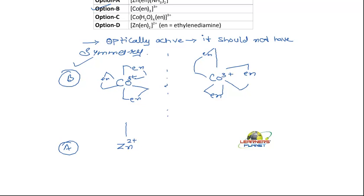This is zinc 2⁺, and there are EN, I have got one NH₃, and here again NH₃. Now this is tetrahedral.